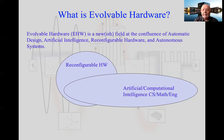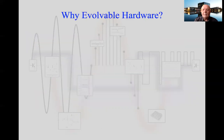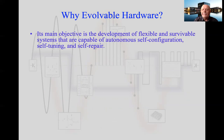By combining reconfigurable hardware and computational intelligence, we can actually automate design — rather than doing everything by hand, we might be able to use computational intelligence to automate design. We can produce autonomous systems: systems that make decisions on their own and reconfigure or adapt as time goes on. All of those things combined allow us to do reconfigurable evolvable hardware, which is the overarching title of this series of three lectures.